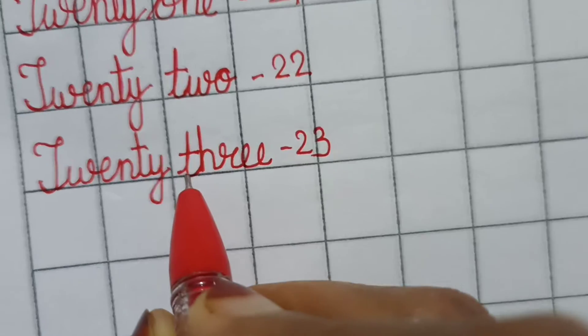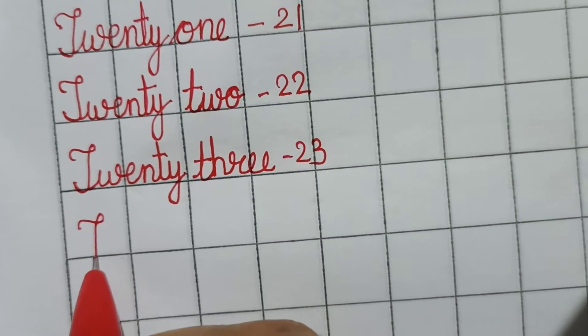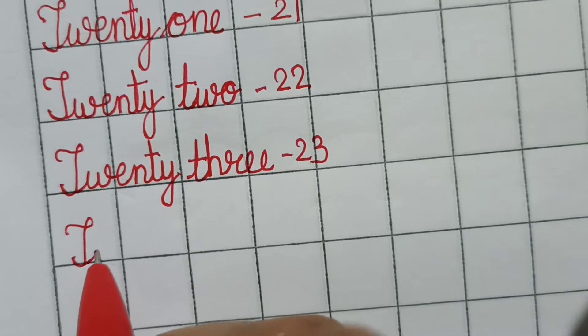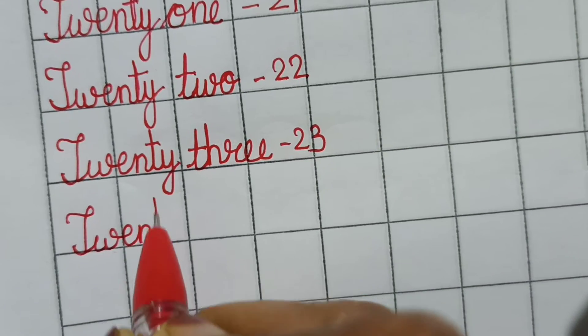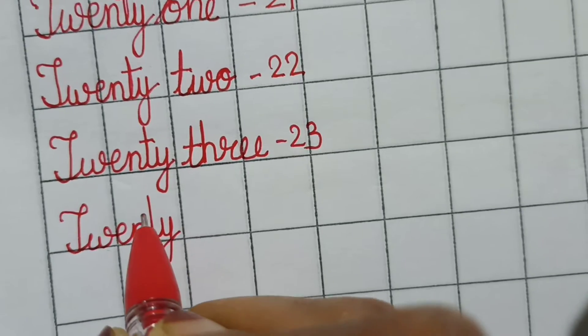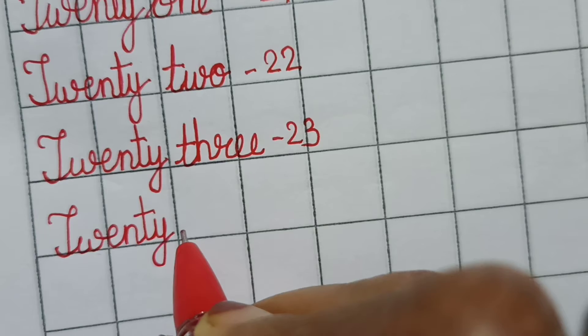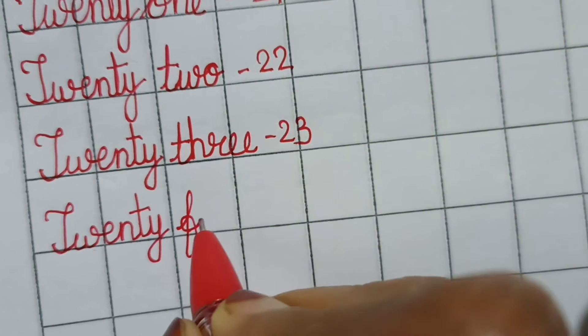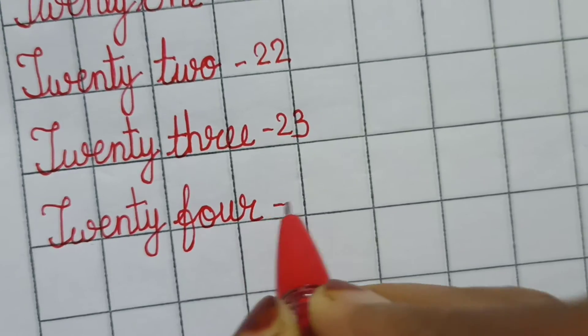This is T small t. Next is 20. Write the spelling of 20: T-W-E-N-T-Y, 20. Now we will write the spelling of 4. We will write the small f. F-O-U-R. 24.